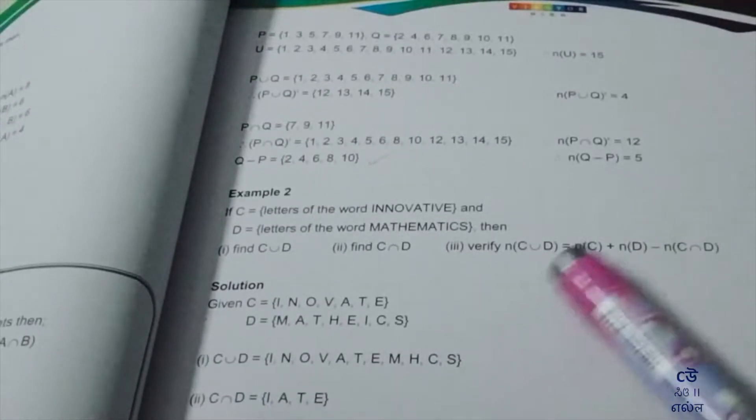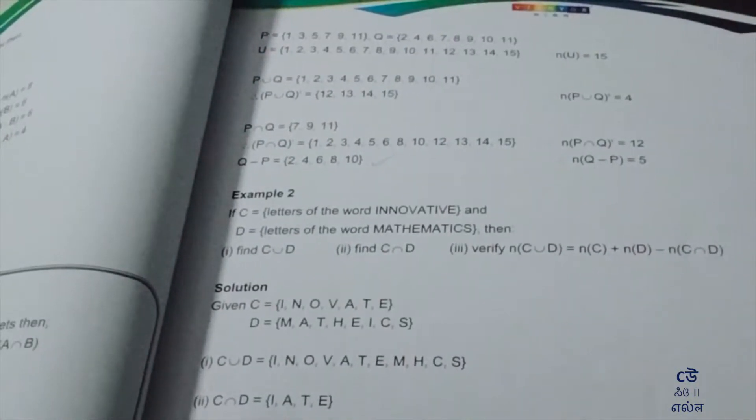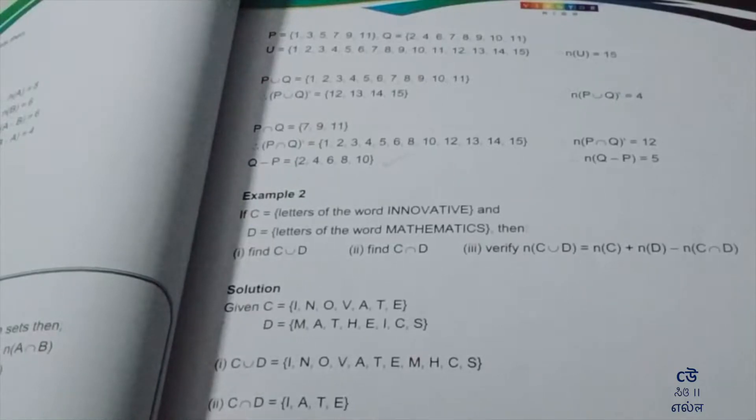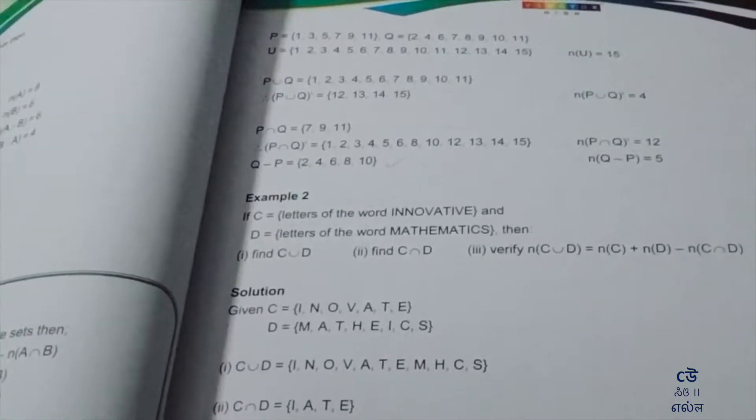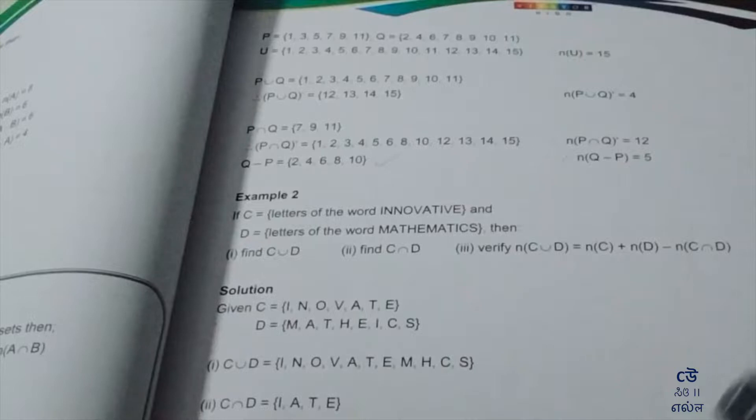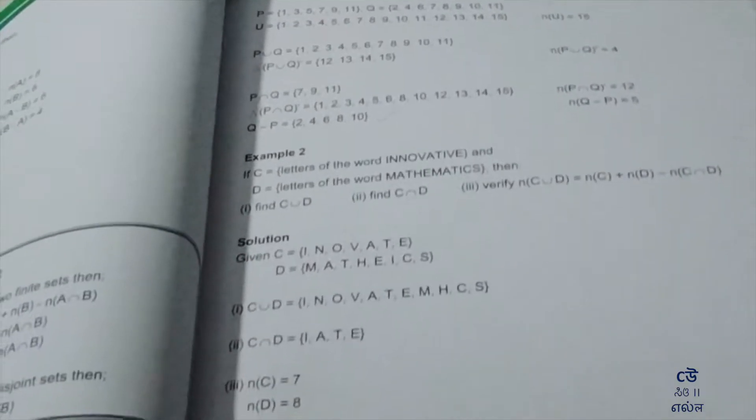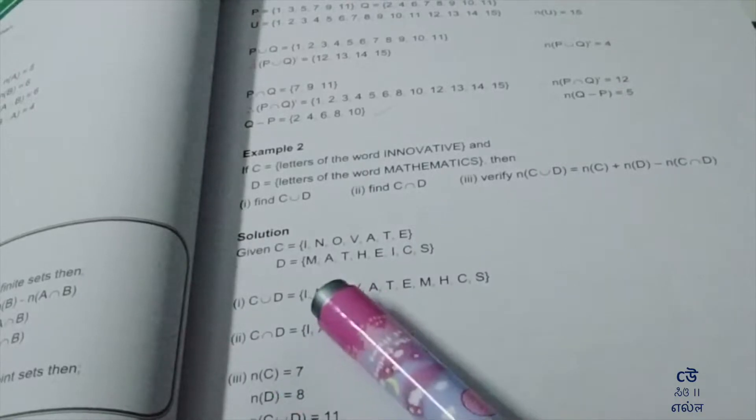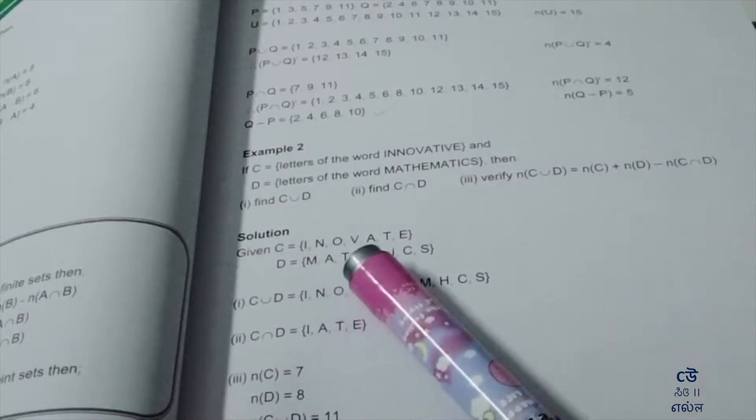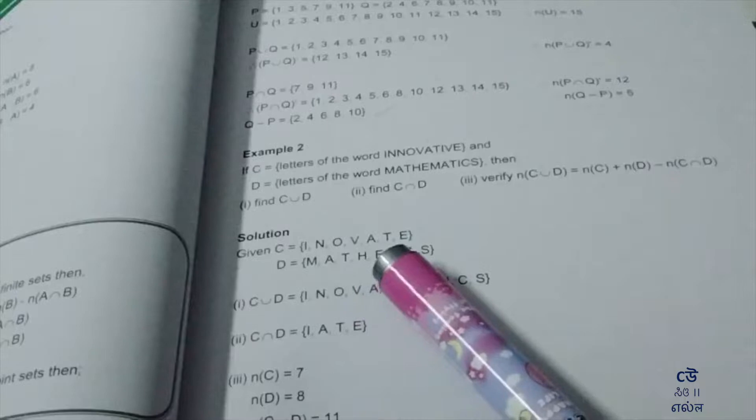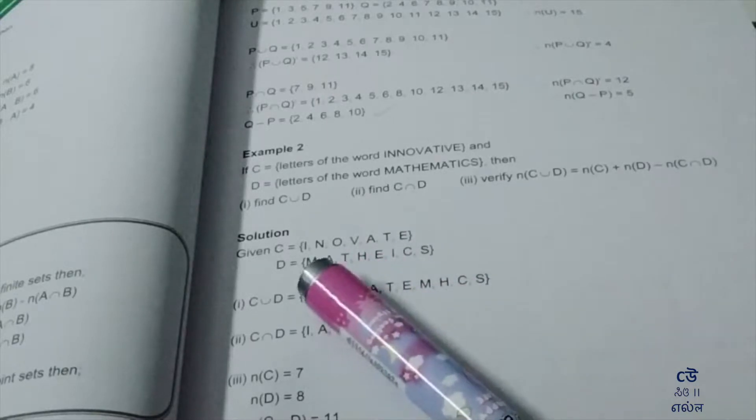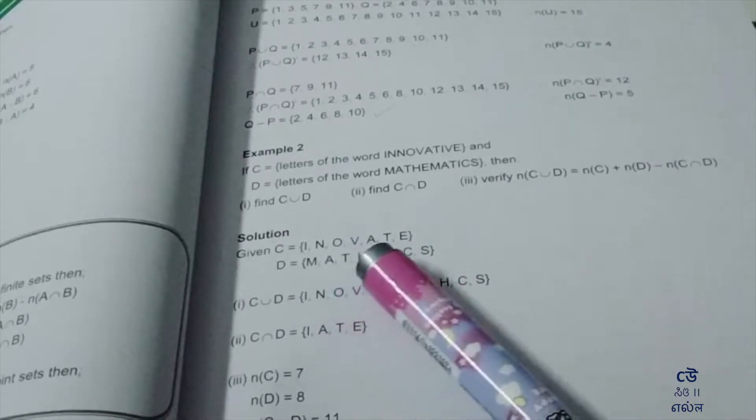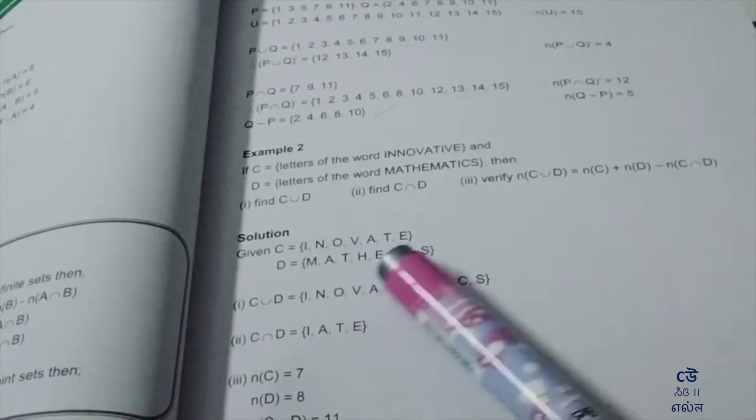Next we verify. The formula is n(C∪D) = n(C) + n(D) - n(C∩D). Count n(C). C is here: one, two, three, four, five, six, seven. n(C) = 7.